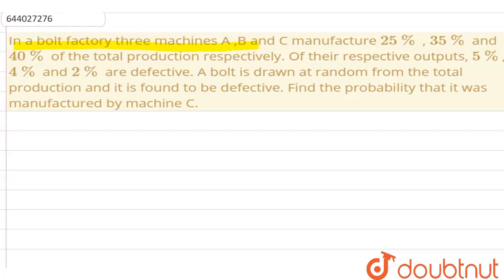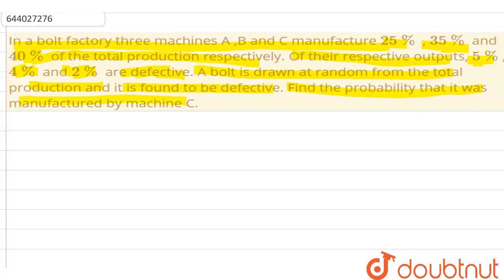The question says that in a bolt factory, three machines A, B and C manufacture 25 percent, 35 percent and 40 percent of the total production respectively. Of their respective outputs, 5 percent, 4 percent and 2 percent are defective. A bolt is drawn at random from the total production and is found to be defective. Find the probability that it was manufactured by machine C.